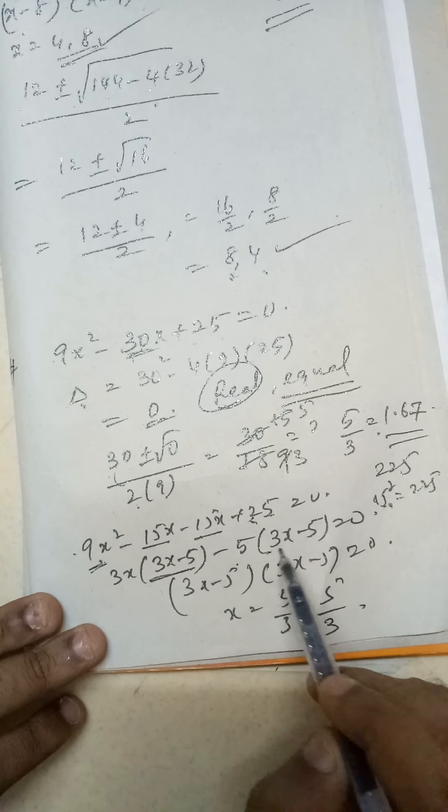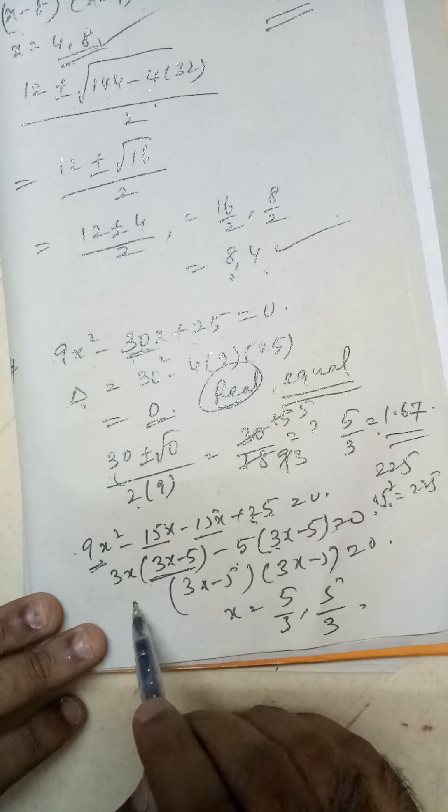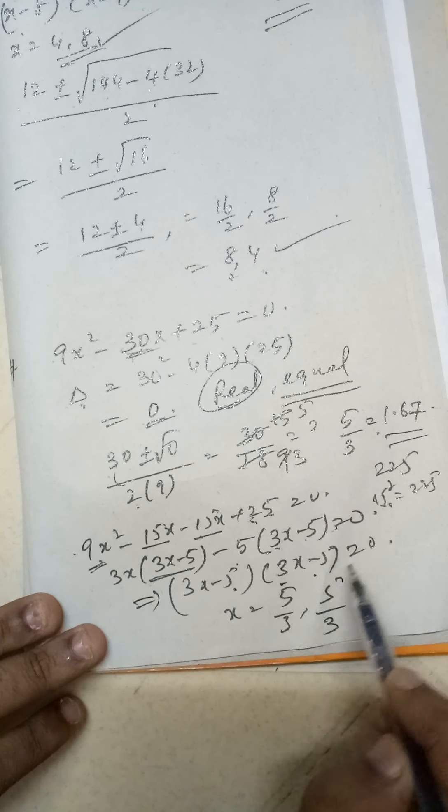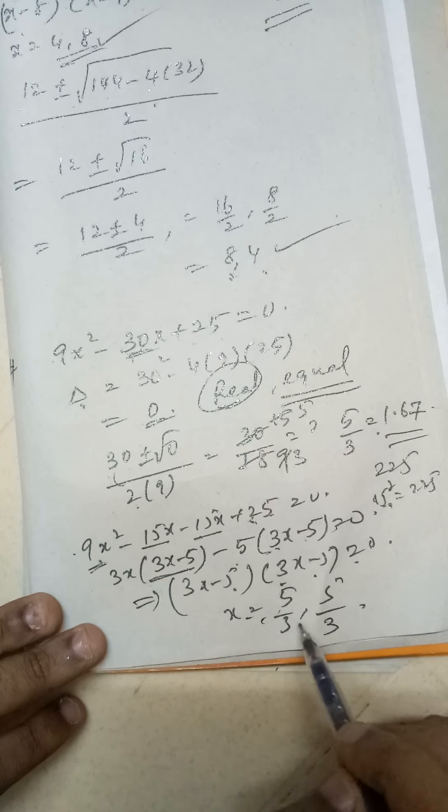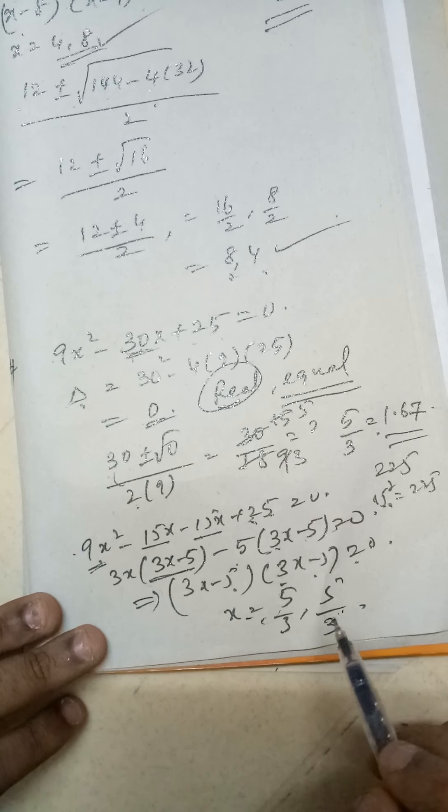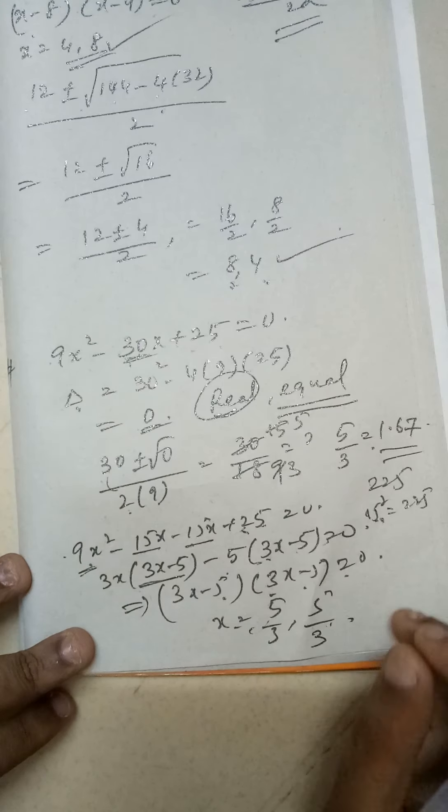So you take out 3x common here, you get 3x(3x - 5). And you take -5 common here, you get -5(3x - 5). So it reduces to (3x - 5)(3x - 5) = 0. So even though you got two roots, they are both equal. Thank you.